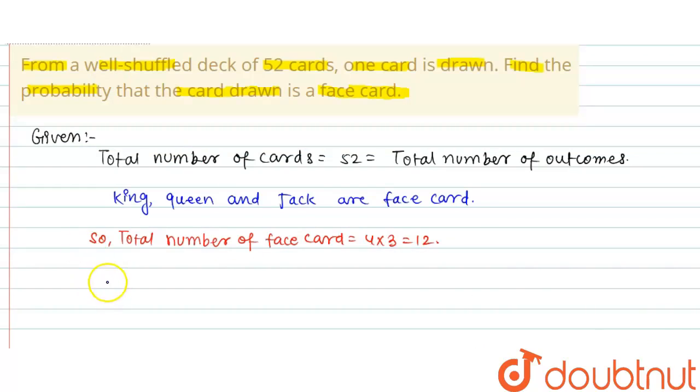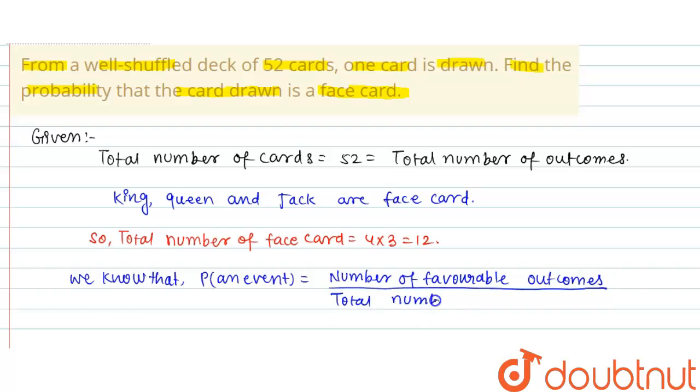We know that probability of an event is equal to number of favorable outcomes upon total number of outcomes.